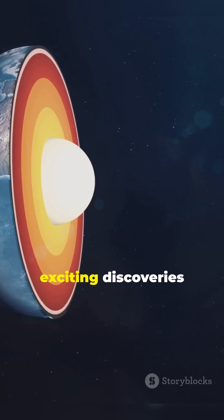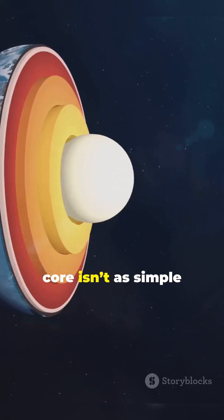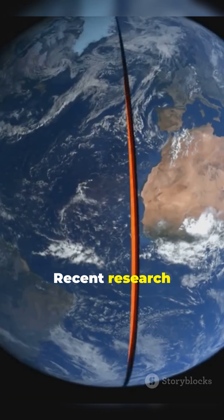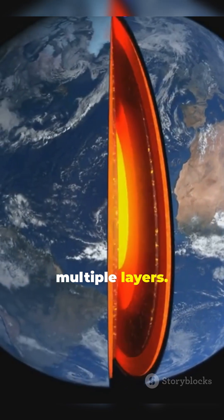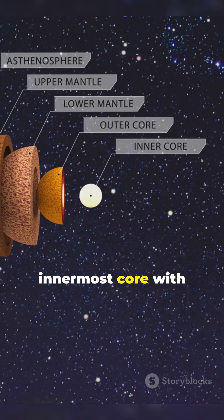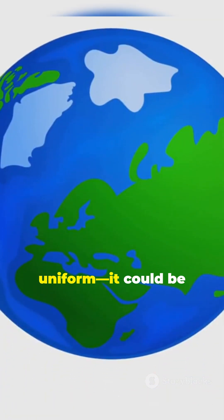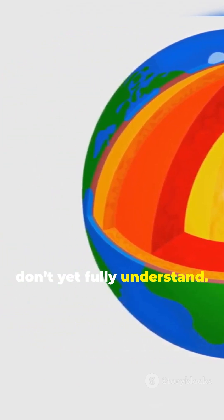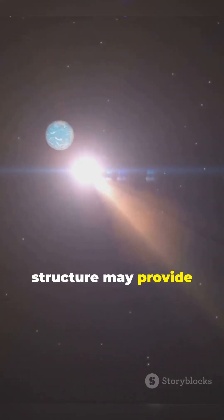One of the most exciting discoveries is that the inner core isn't as simple as we once thought. Recent research suggests it may have multiple layers. Beneath the solid iron core, scientists believe there could be an innermost core with slightly different properties. This means the inner core might not be uniform. It could be structured in ways we don't yet fully understand. This layered structure may provide clues about how the core formed billions of years ago, and how it's evolving today.